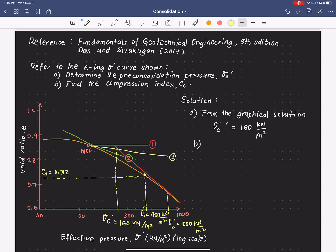And for the effective pressure of 800, we have another e value, which is e2 equals 0.627.